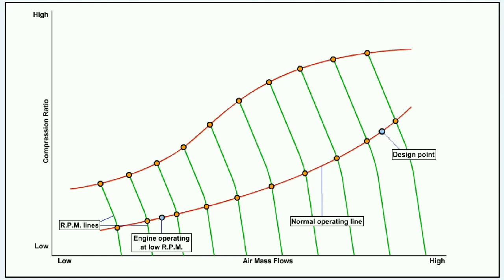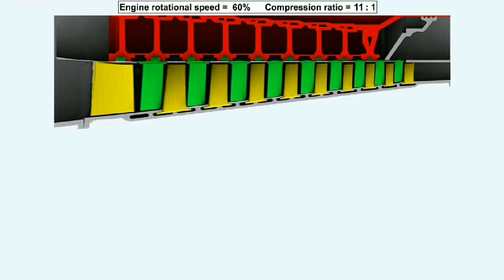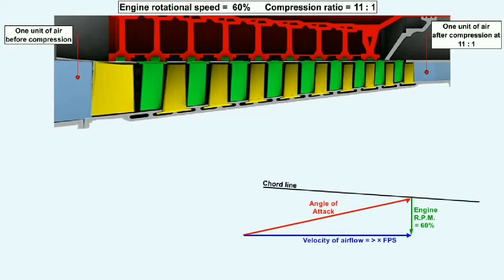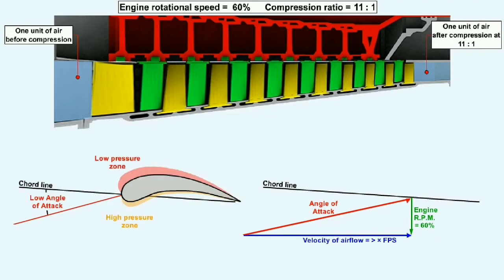When the engine is operating at low rotational speeds, the air is not being compressed as much as at the design point, and the volume it occupies inside the engine becomes greater. At 60% of full power, the compression ratio reduces to 11 to 1. The increased volume of air must move faster to get through the compressor in the same time. The changed relationship between the increased axial velocity and the reduced RPM gives a low angle of attack over the rotor blade, reducing the size of the pressure zones.